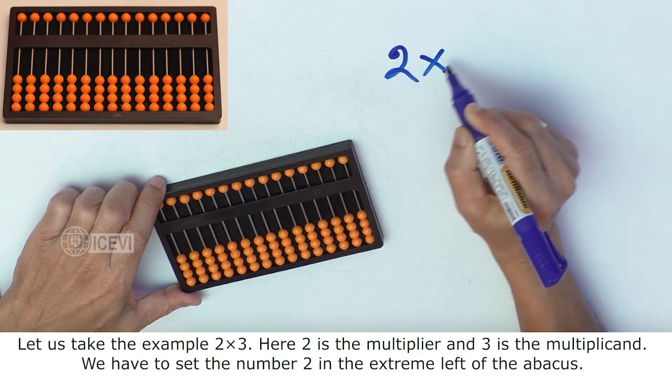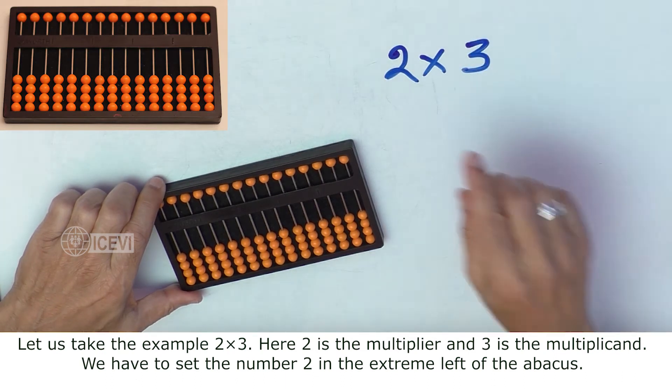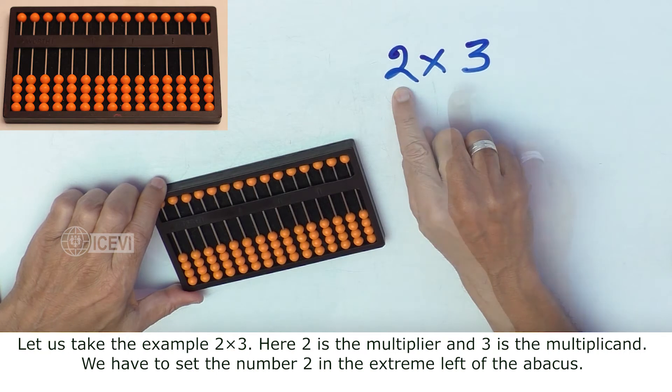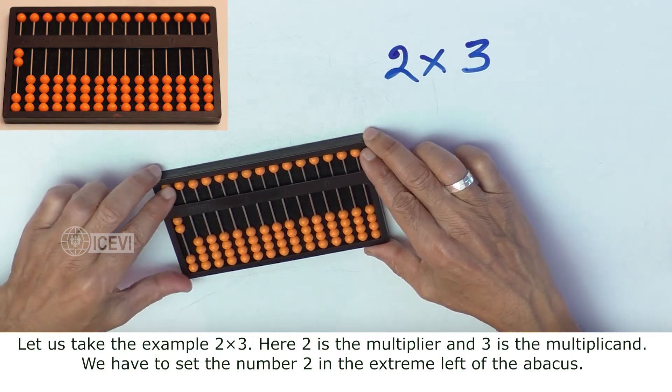Let us take the example 2 multiply by 3. Here, 2 is the multiplier and 3 is the multiplicand. We have to set the number 2 in the extreme left of the abacus.